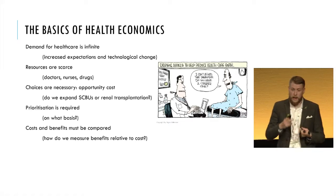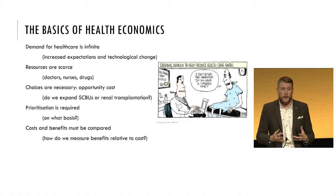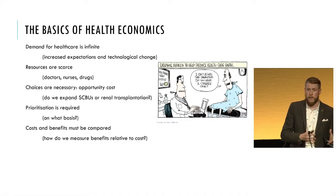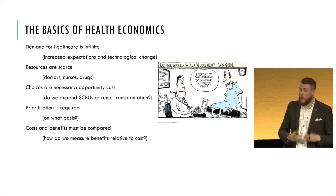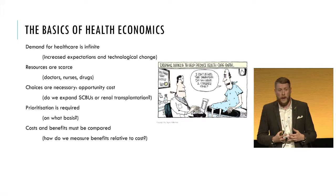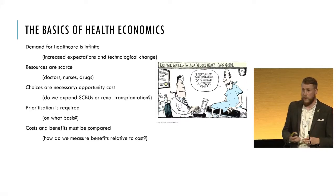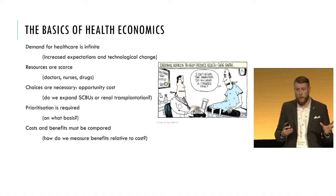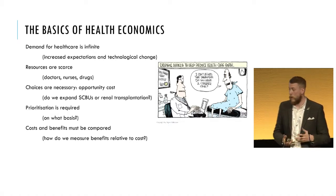So because demand is high and resources are scarce, we need to be able to make choices between different competing alternatives in healthcare — in terms of treatment services and the treatment mix within services. We have to establish a way to prioritise different treatments and services, and in order to do this we need to understand how much they cost but also how much we get out of them in terms of health outcomes and health benefits for patients.